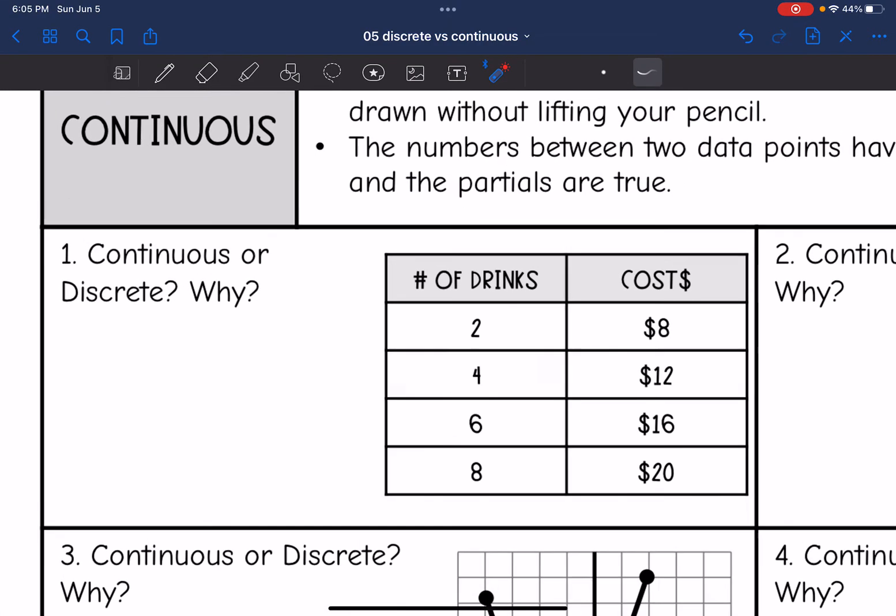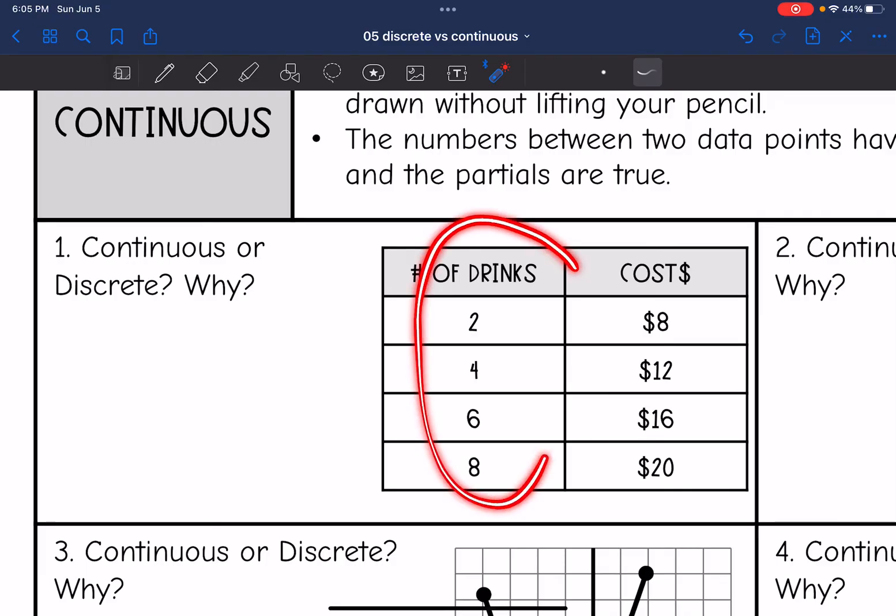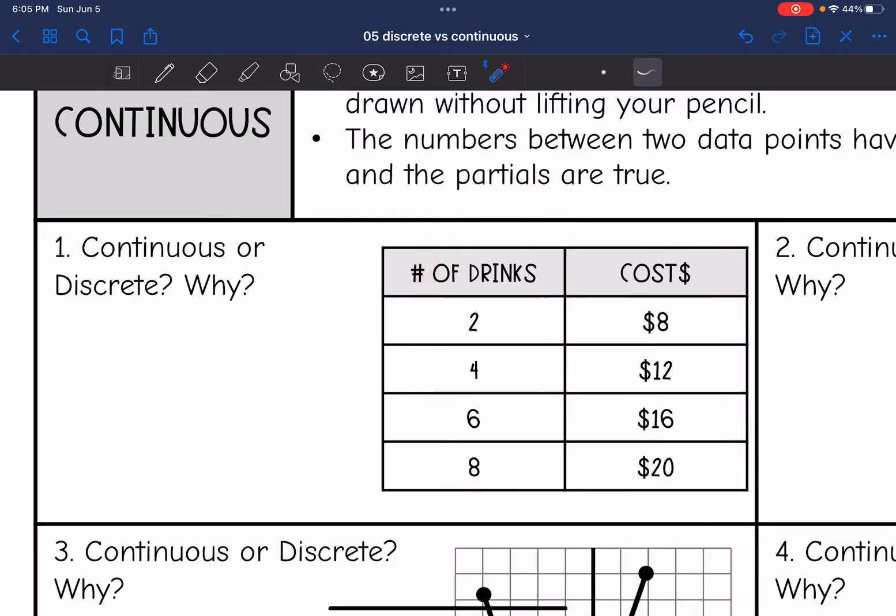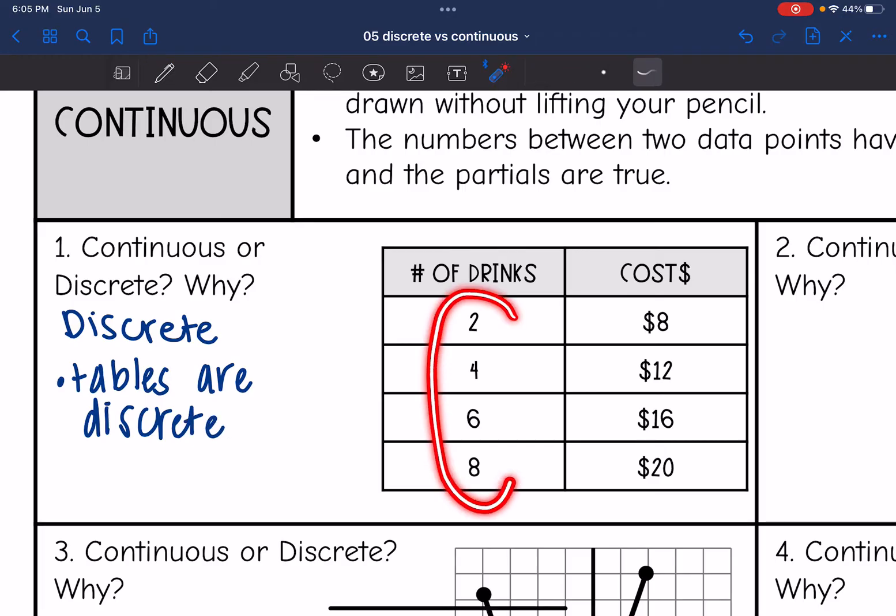So let's look at this first one. We have a table that's talking about the number of drinks and the cost. So most of the time in tables, we are going to assume that tables are discrete. And the reason for that is we don't know that the partials between 2 and 4 are true. So usually tables are discrete. And then also if we just think about this situation, they're probably not going to let you buy a partial number of drinks. They're not going to let you buy like a third of a drink. They're going to say you have to buy the whole thing. So no partials here. So that's why this one's discrete.